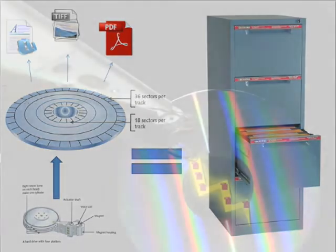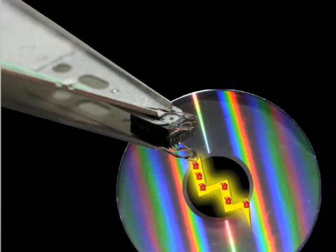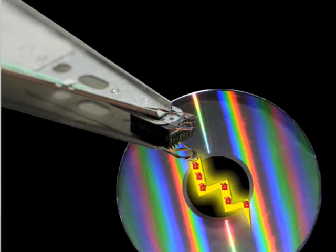But how does the data actually get onto those platters? There are two components of a hard drive that work in unison to put your data onto the platters: the read-write mechanism and the controller board. Read-write heads are the physical pieces that actually write the data to a platter. As you can see in your hard drives and in the simulated view of a write operation on screen, there are triangular actuator arms that reach over the platters. At the end of each actuator arm is an electronic component that hovers just above, but never touches, the platter. These components are the read-write heads, responsible for writing the magnetic charge to the platter and reading it back when necessary.